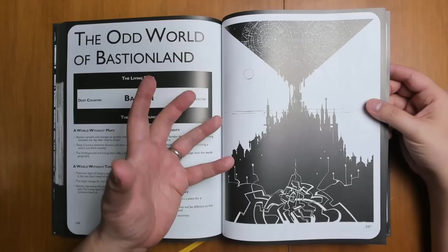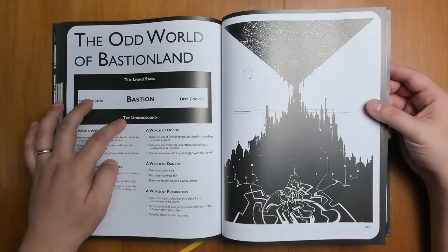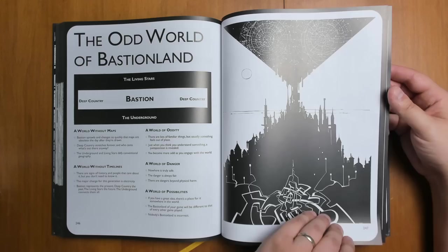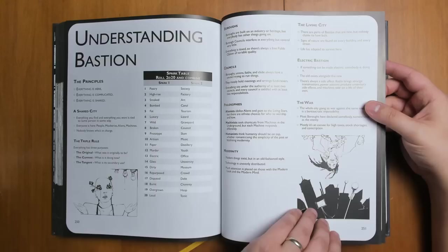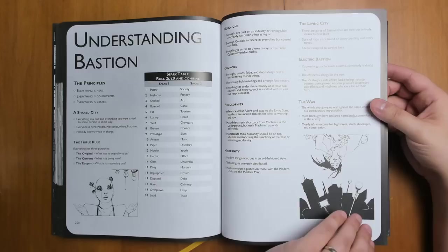We have the odd world of Bastion Land. Basically, you have the city of Bastion where this presumably mostly takes place. We can also venture out into the weirdness of deep country and or go up to the living stars, which are closer than you might think. Or the weirdness of the underground, which is the incomprehensible, strange network of tunnels and caves that lurk beneath the city. Understanding the city has these principles. Everything is here. Everything is complicated. Everything is shared. And these principles are fleshed out throughout all of these other pieces of game advice.